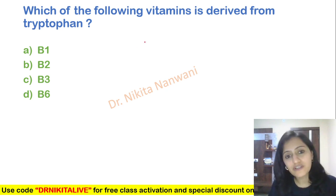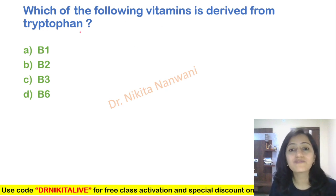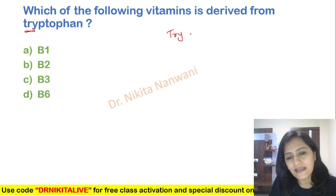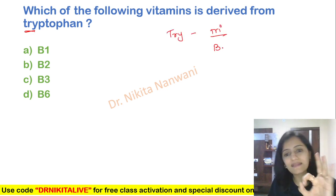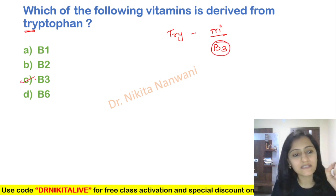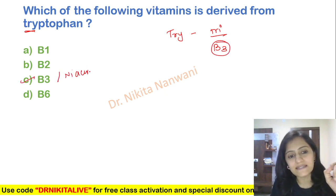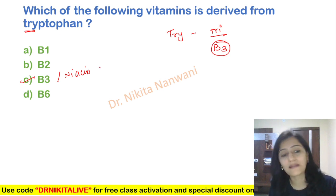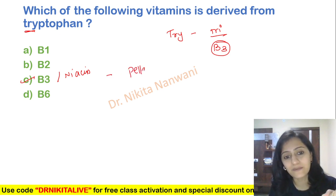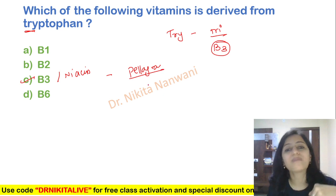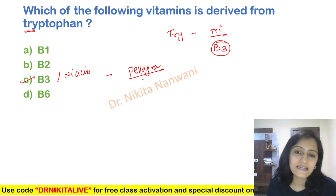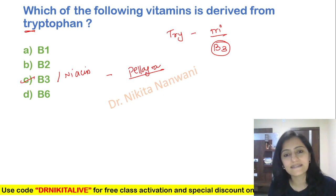Next: which of the following vitamins is derived from tryptophan? The easy trick — tryptophan is T-R-Y, that is 'tri,' meaning three, so it is vitamin B3, that is niacin. So any problem with availability of tryptophan means niacin deficiency, which means symptoms of pellagra, because niacin deficiency causes pellagra — including Casal's necklace and the four Ds: diarrhea, dermatitis, dementia, and the fourth D, that is death.